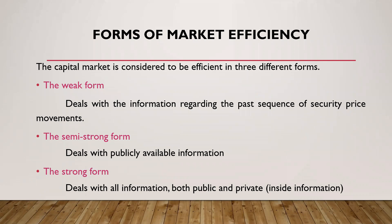There are three forms of market efficiency under the efficient market hypothesis. The first one is the weak form, the second is the semi-strong form, and the third is the strong form. Under the weak form, the information regarding past sequences of security price movements are already reflected in current stock market prices. The semi-strong form states that not only past prices but also publicly available information is incorporated into current prices. The strong form states that all information — both public and private — is adjusted in the current prices.